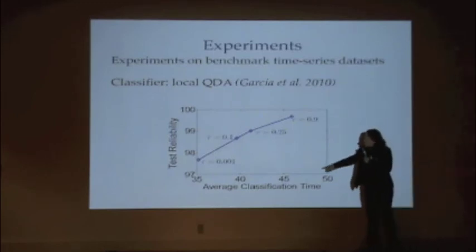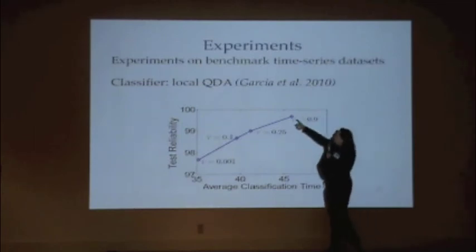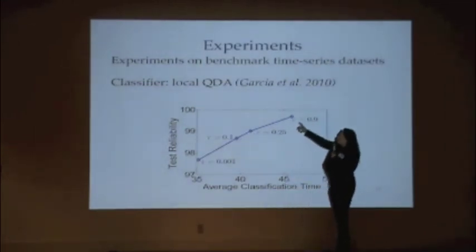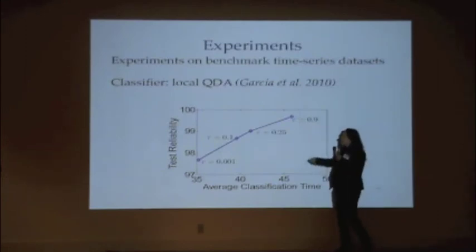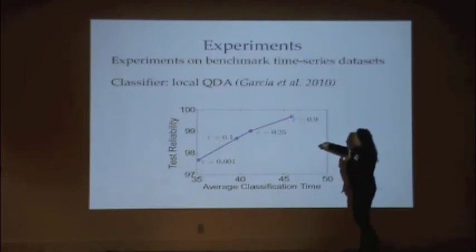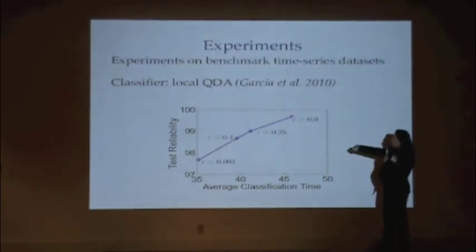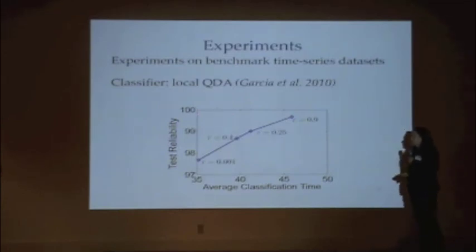We look at classification time versus test reliability, with different markers for different tau values. The furthest right marker for tau equals 0.9 says: asking for 90% reliability, on average we classified after 46 seconds, and on the test data we actually achieved 99.9% reliability — so we were conservative.